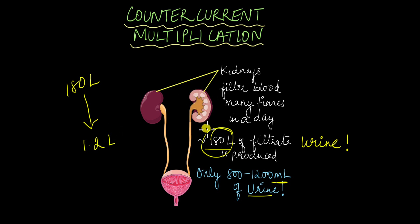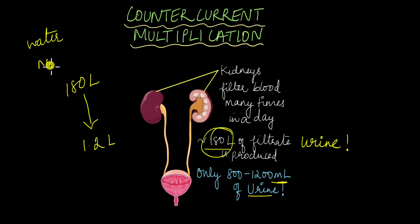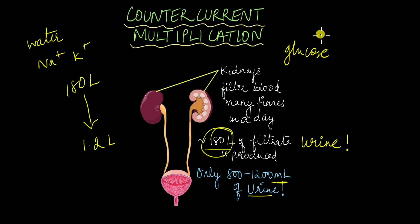This is all thanks to the nephrons in your kidneys. This is a very important process because our body does not like to waste its substances. Whatever water, electrolytes like sodium, potassium, whatever ions, whatever glucose — our body tries to conserve it because it needs those valuable resources. So the kidneys make sure that a lot of these resources are reabsorbed back into the circulation from the filtrate, producing only around 800 to 1200 ml of urine.